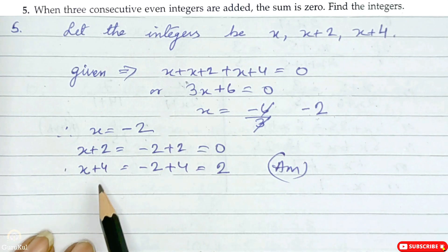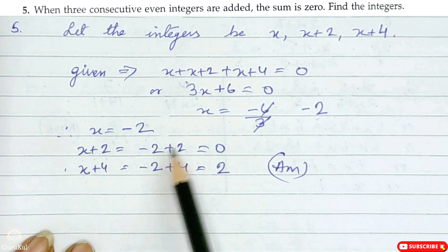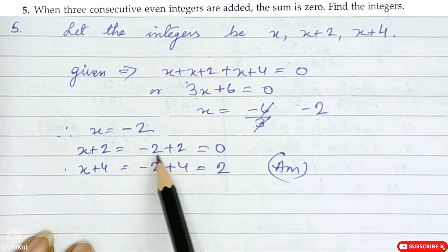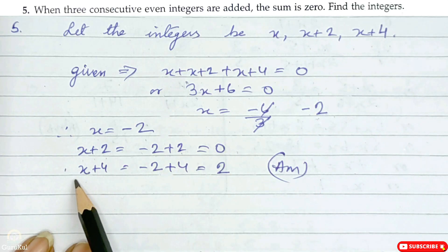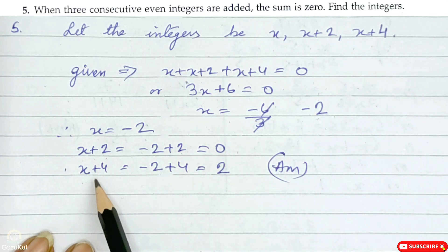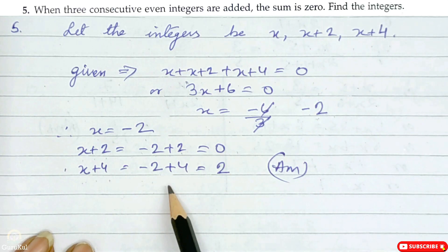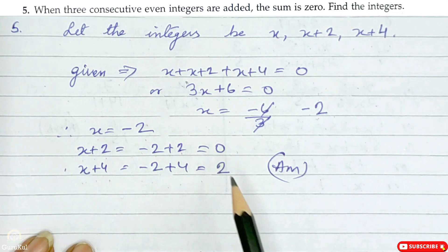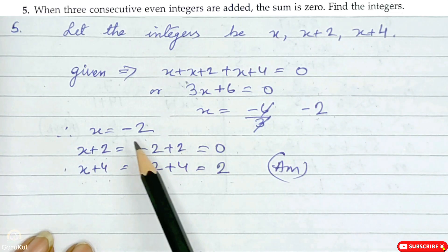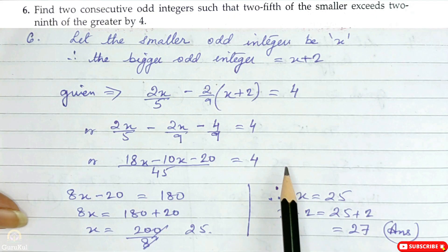So what are the integers? x is minus 2, x plus 2 is minus 2 plus 2 = 0, and x plus 4 is minus 2 plus 4 = 2. So the 3 integers are minus 2, 0, and 2.